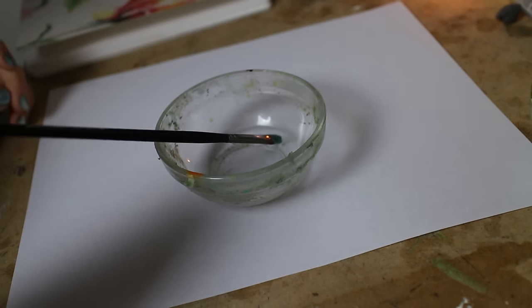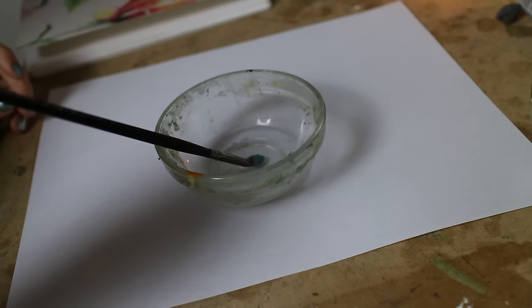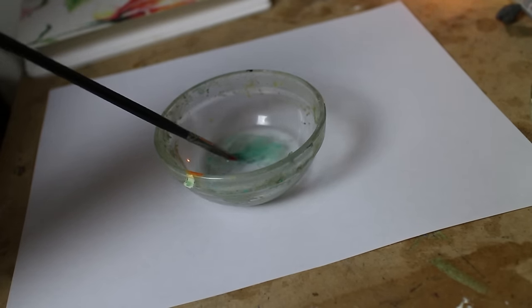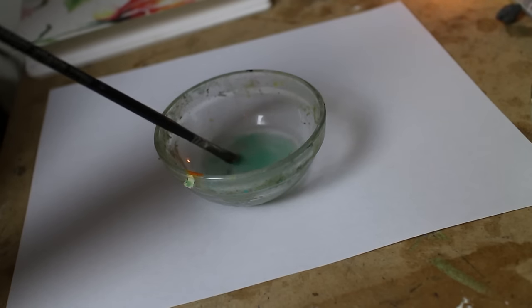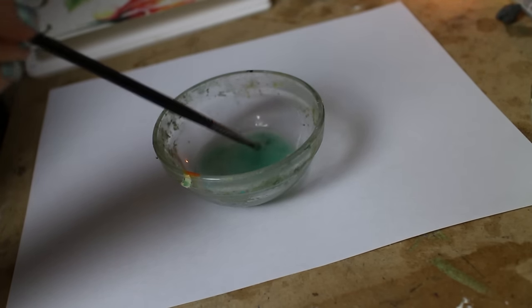I just soak the brush in it and you can already see the paint coming off the brush and mixing with the brush cleaner. So what the brush cleaner does is it loosens up the paint on the bristles, but you're still going to need to scrape some of it off.